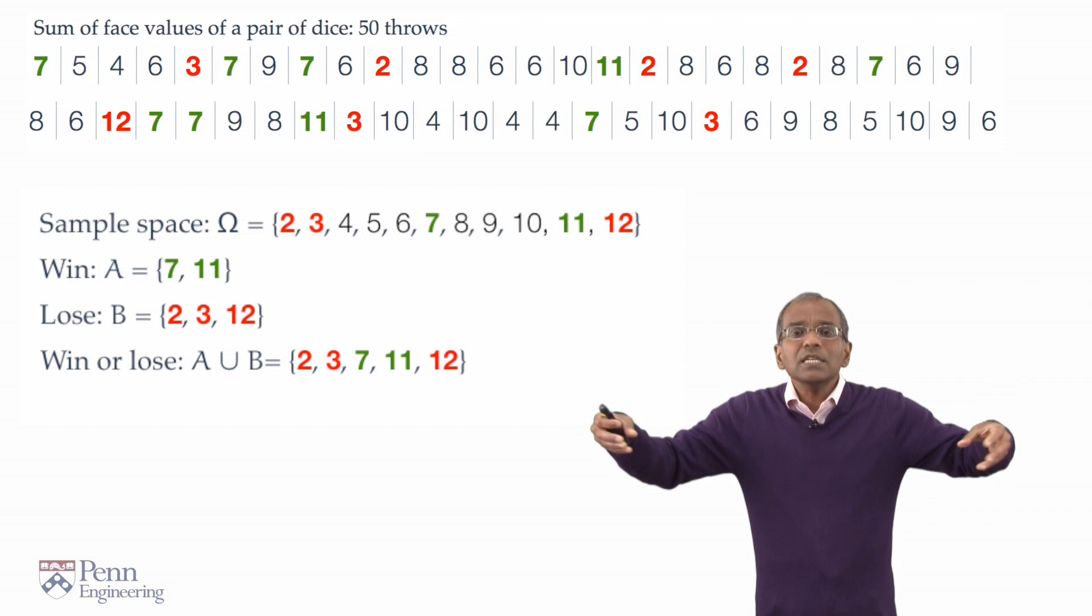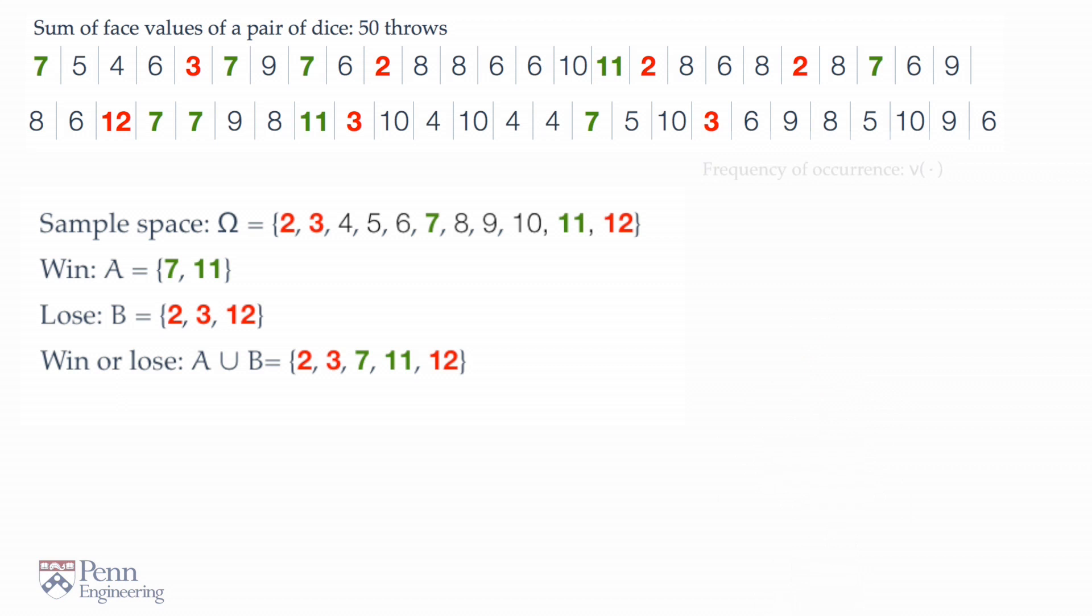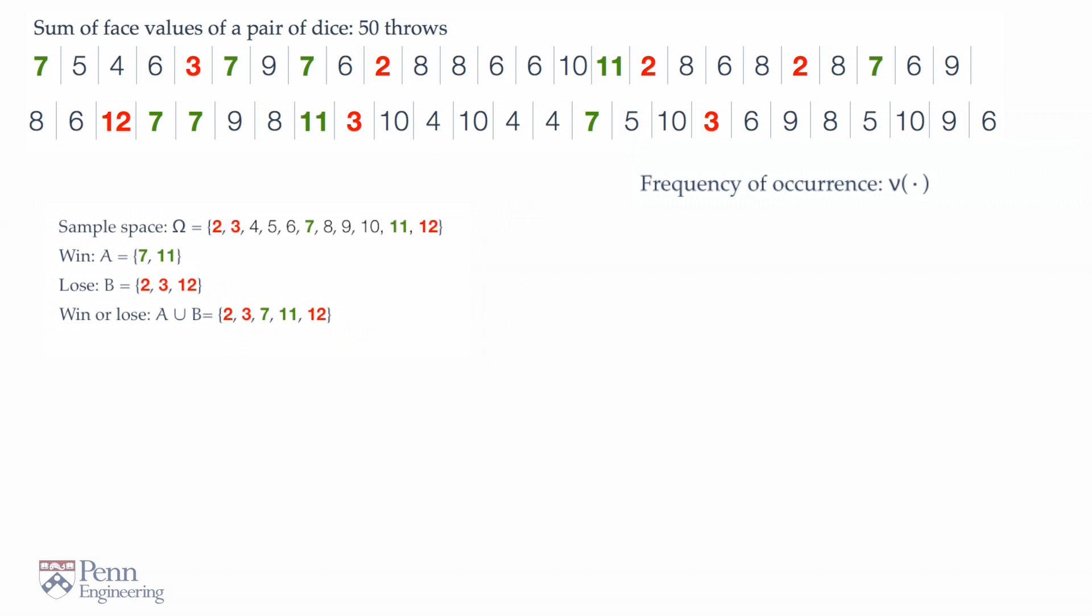Independent performances of this experiment. Let us introduce a little nonce notation, a temporary notation. Let's use the Greek letter nu to represent frequency. So the frequency of an event we define to be the number of times the event occurred divided by the number of times the experiment was performed.